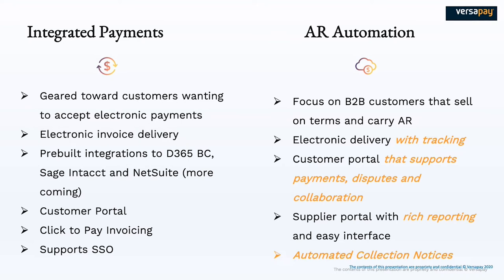We also now with the merger have this AR automation platform, and that really is going to take you a step above and beyond the integrated payments. You can see in the orange there are some incremental pieces that come in with the AR automation platform. Although you can still do electronic invoice delivery, there are now tracking options where you can see if an invoice has been received or viewed. There is a more robust customer portal where you can do payments of multiple invoices, log disputes, apply credits, and a lot of different things. Additionally, there would be a supplier portal for you to look at your accounts receivable in a different way — what is your overall days sales outstanding, and there's the ability to do automated collection notices.